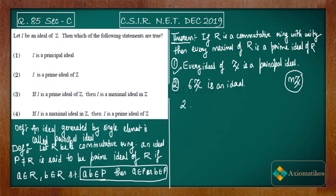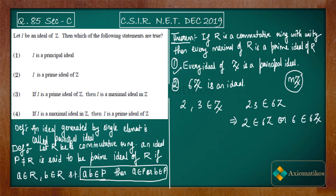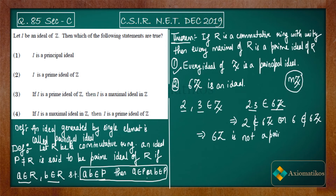Take 2 and 3, which belong to Z. Now 2·3 = 6, which belongs to 6Z — yes. But do you think that 2 belongs to 6Z or 3 belongs to 6Z? No, it is not. So I have taken two elements from the ring Z, operated them, got that 2·3 belongs to 6Z because the product is 6. But neither 2 nor 3 belongs to 6Z, so the condition breaks — 6Z is not a prime ideal.